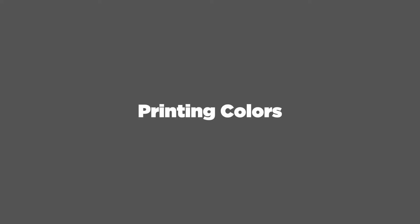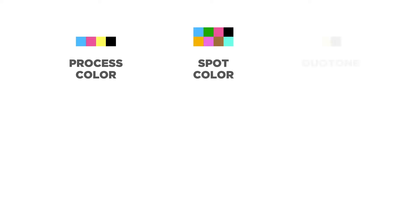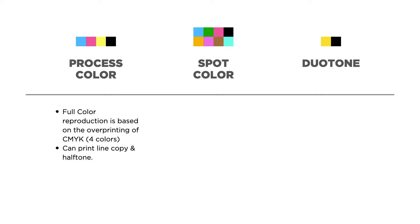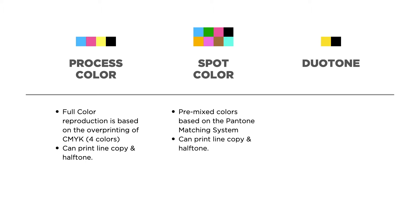Now let's talk about the color terminologies associated with printing. Process colors are used for full color reproduction and come from the overprinting or mixture of CMYK on the surface of paper. Process colors can be used to print both line copy and halftones. Spot colors are pre-mixed colors based on the Pantone Matching System — they can also print line copy and halftones. Duotones, from the name itself, use two colors to print halftones.